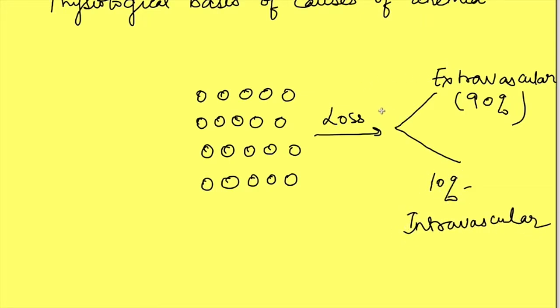The numbers which are destroyed are replaced by production from bone marrow. So there is a gain of RBCs from bone marrow, this is production.